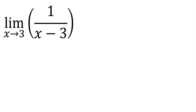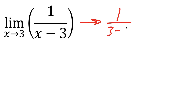In this video, we're going to solve this limit problem right here. So let's begin. What I like to always do is plug in the value that x approaches. And if I plug in the value x approaches, which is three, let's see what we get. We would get one divided by three minus three, which is one divided by zero.